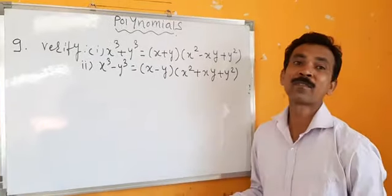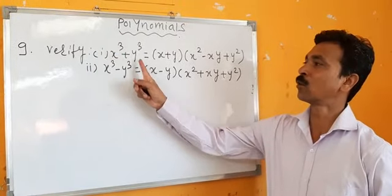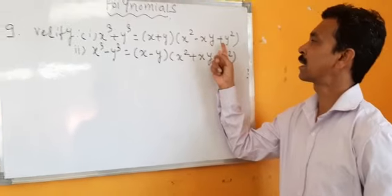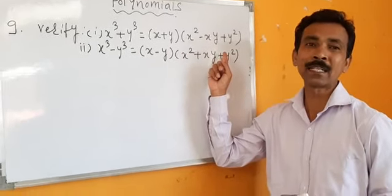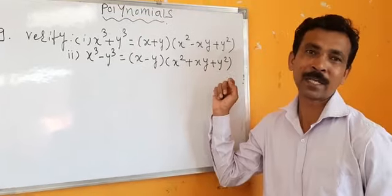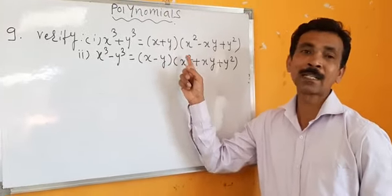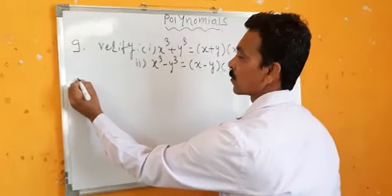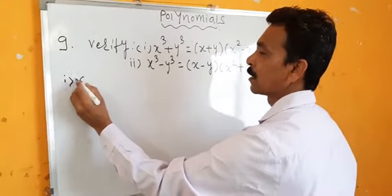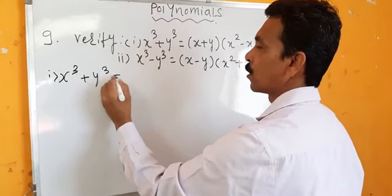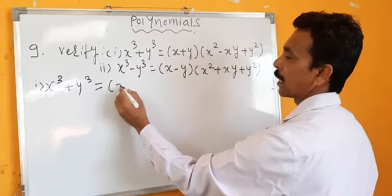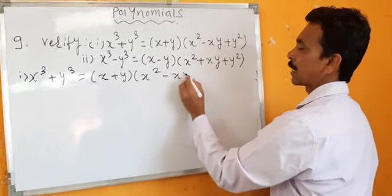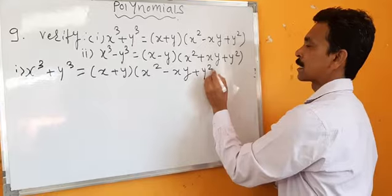Question number 9 — verify. The first is: x cube plus y cube equals (x + y) into (x squared minus xy plus y squared). This is an identity and we have to verify it. These identities are used in solving sums. We just have to verify the identity. I will take the right-hand side and prove it equals the left-hand side.